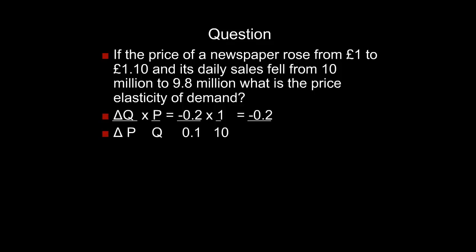Let's look at a worked question. The price of a newspaper rose from £1 to £1.10 and its daily sales fell from 10 million to 9.8 million. What's the price elasticity of demand? Using the point measure, we get minus 0.2. The change in P is 0.1, the change in quantity is negative 0.2 million, and we multiply by the original price of £1 over the original sales of 10 million, giving minus 0.2.